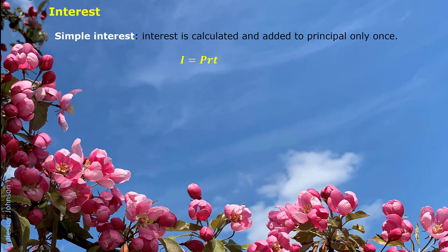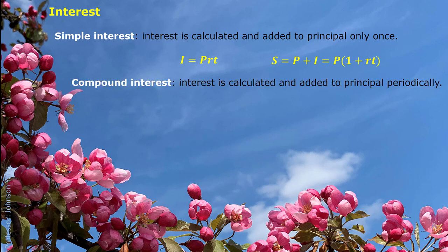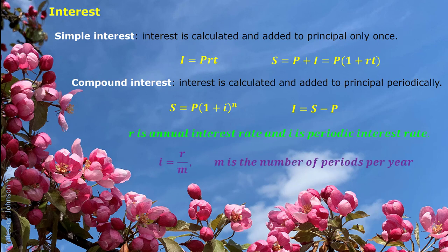Then we talk about interest. Simple interest is the case where interest is calculated and added to the principal only once. We calculate it as PRT: principal multiplied by annual interest rate and multiplied by time period. Compound interest is the case where interest is calculated and added to the principal periodically. This shows the relationship between the maturity value and the principal, and the interest is the difference between the maturity value and the principal. They are also called the future value and the present value.